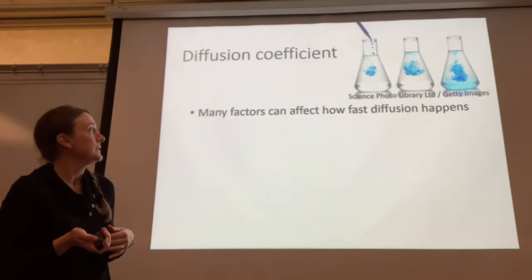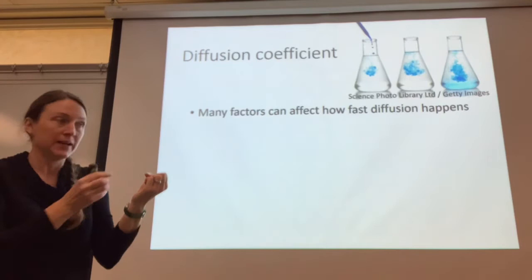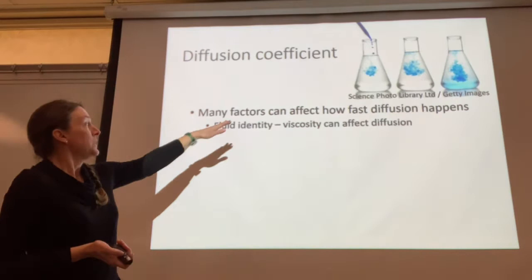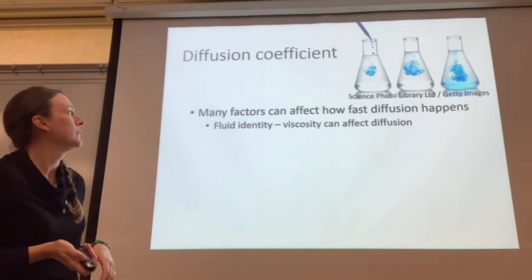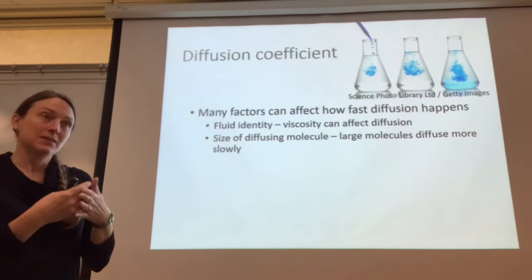Here are some pictures showing diffusion of a dye in a liquid. You can see how it moves naturally — you drop a dye drop in water, it doesn't stay a drop, it diffuses. Many factors affect how fast diffusion happens. The fluid identity matters: something more viscous will slow down diffusion. If you dropped a dye into corn syrup, it wouldn't diffuse as fast as in water. Viscosity slows diffusion, and the size of the diffusing molecules matters too — a large molecule moves through liquid slower than a small molecule.